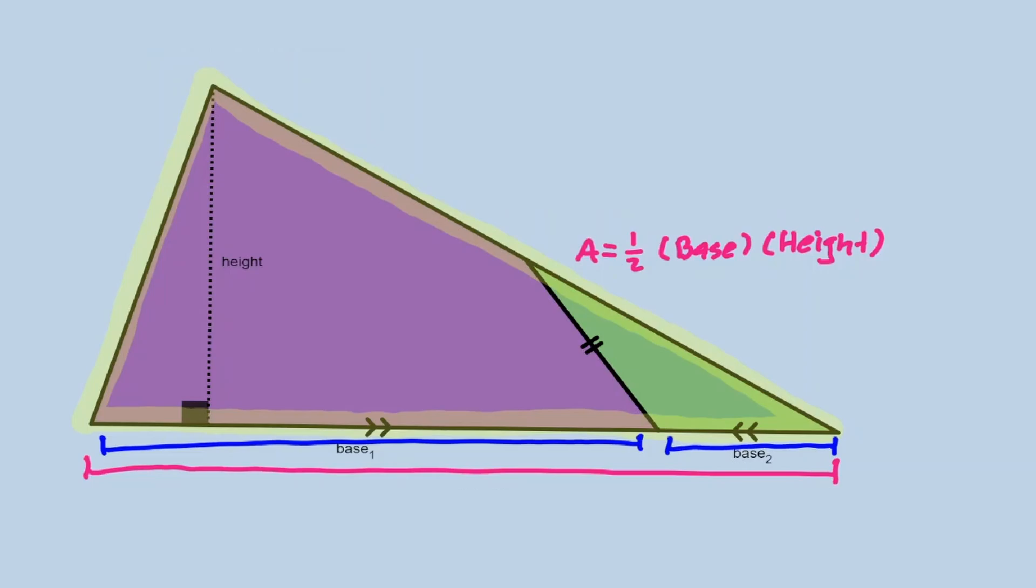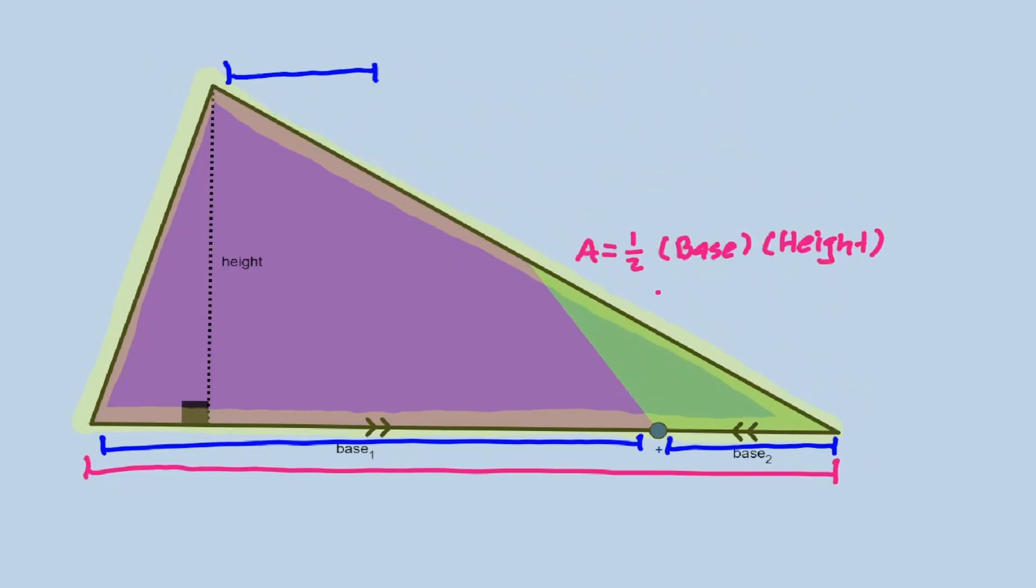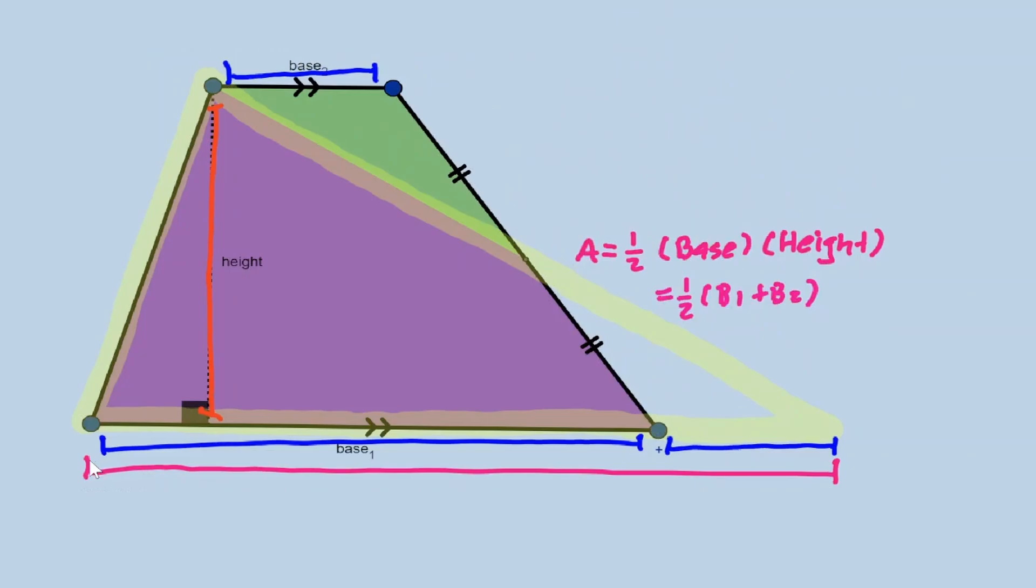Let's show the original trapezoid. Notice that after our rotation the length of this base landed exactly in this section and the height of this triangle is the same as the height of the original trapezoid.